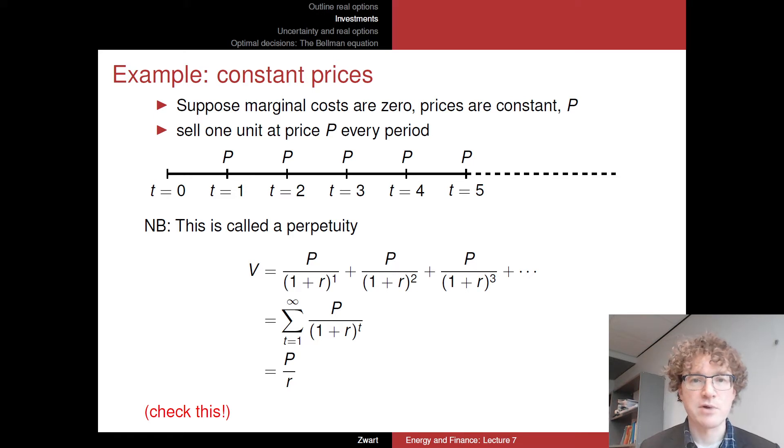So let's look at the trivial example, that where there are constant prices, no costs, so marginal costs are zero, the prices are at level P all the time, and we're going to just have a machine, basically, a factory which can produce one unit of the good, and sell this at price P in each of these periods for eternity, if you wish. So from T equals zero until each year until T equals as high as you like. But this is basically when we get cash flows P each year, and then we know that this is actually in finance called a perpetuity. So that's actually an interest rate instrument, if you followed any corporate finance or asset pricing courses in the past.